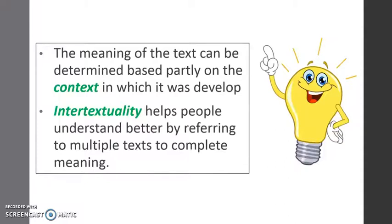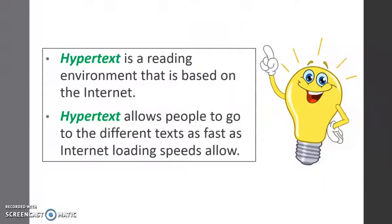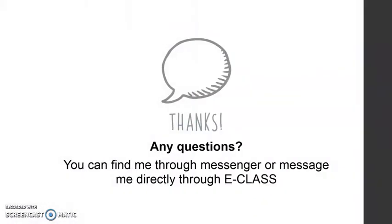So that is how you can identify context through hypertext. To end this lesson, remember these important points: first, the meaning of a text can be determined based partly on the context in which it was developed. Second, intertextuality helps people understand better by referring to multiple texts to complete the meaning. And lastly, hypertext is a reading environment based on the internet that allows people to go to different texts as fast as internet loading speeds allow. That's all for our lesson — this is your teacher Joy, thank you and see you again!